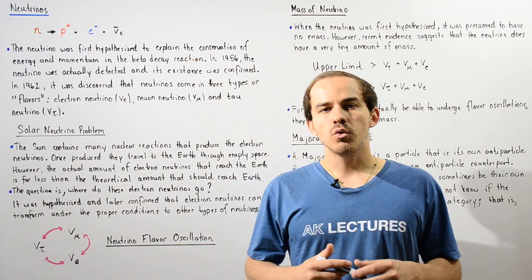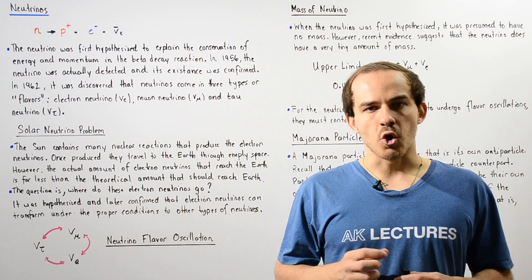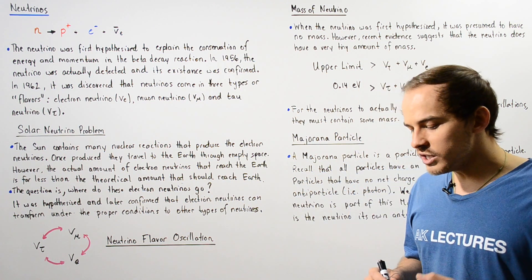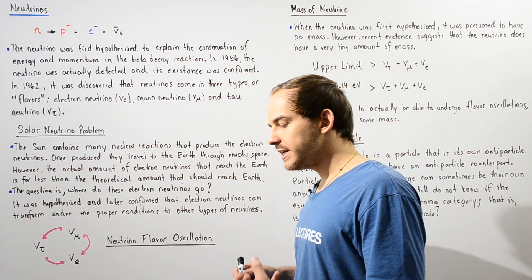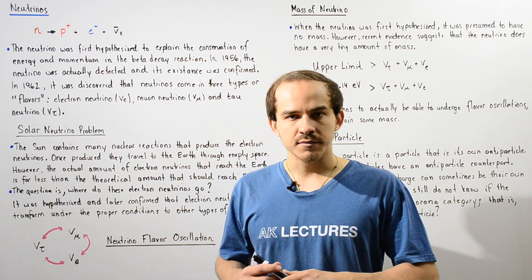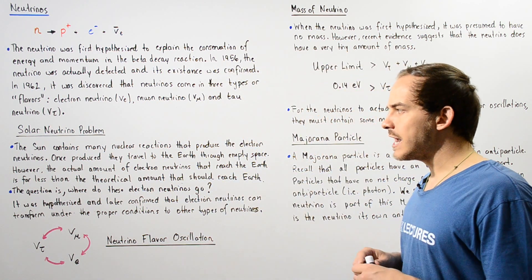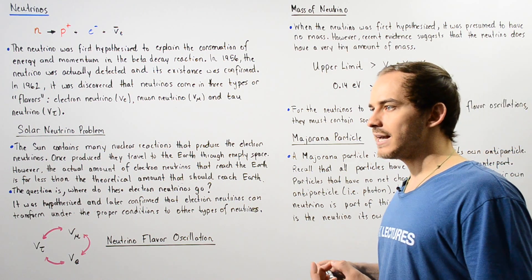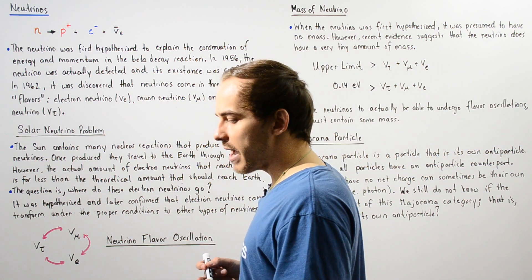In this lecture, we're going to briefly discuss the neutrino particle. The neutrino particle is a very elusive particle, that is, it's very hard to detect. And as we'll see in this lecture, one of the reasons for that is because it has a very small mass.